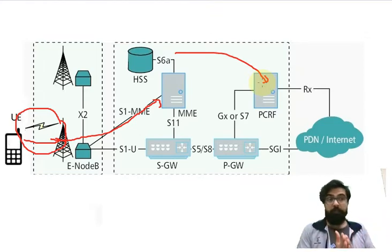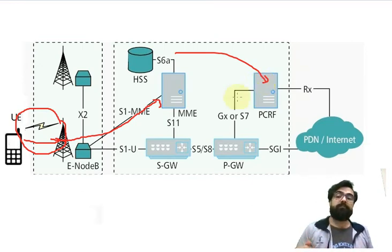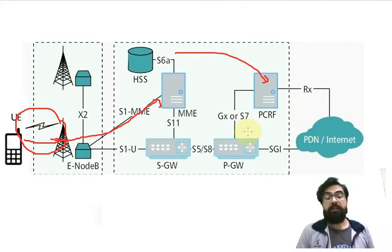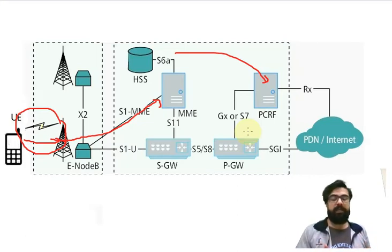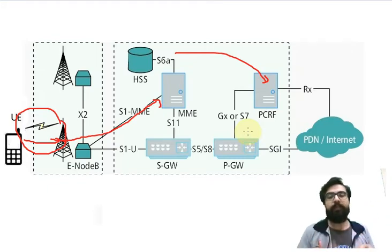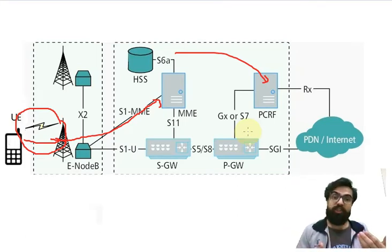Now the UE again sends a request we call a PDN connectivity request which contains two things. The first thing is QCI—a number—and based on that QCI, PCRF will assign QoS to the service.